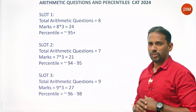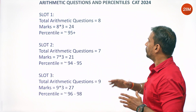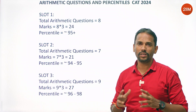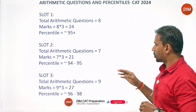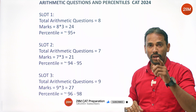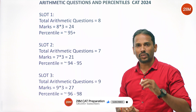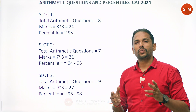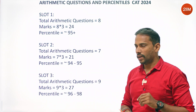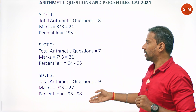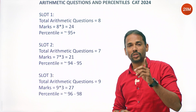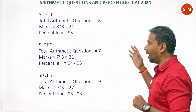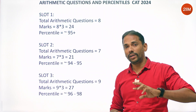Just to give you quick stats from CAT 2024: across all three slots, Slot 1 had 8 arithmetic questions, Slot 2 had 7, and Slot 3 had 9. Imagine doing these questions with proper accuracy — each question carries 3 marks. Attack these questions and see the percentile scores. This is not fancy; it is reality. That's the strength of quant arithmetic.